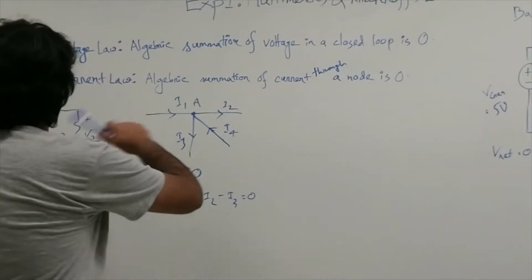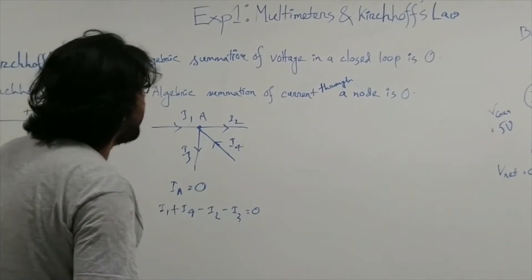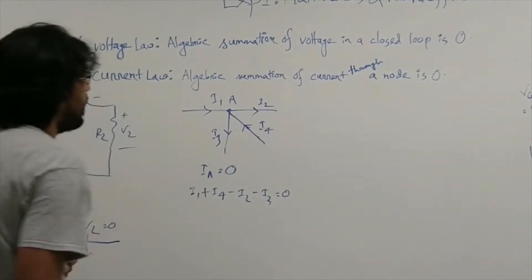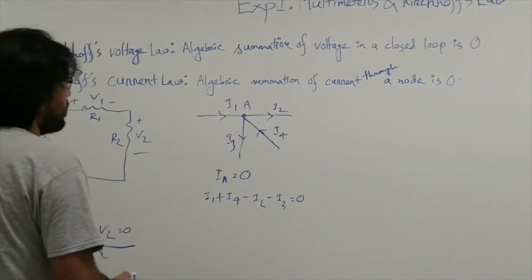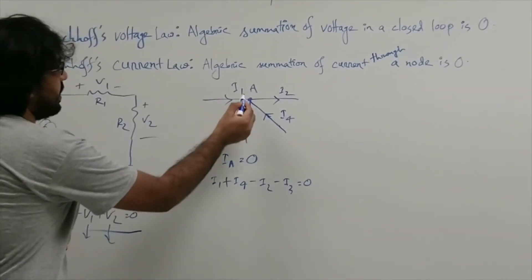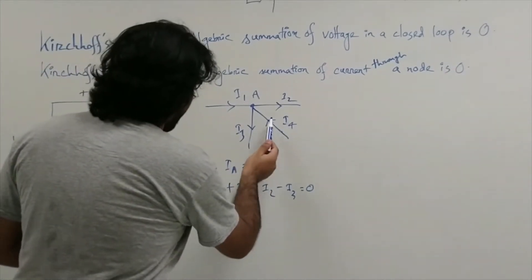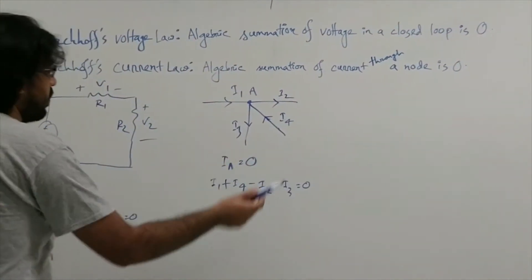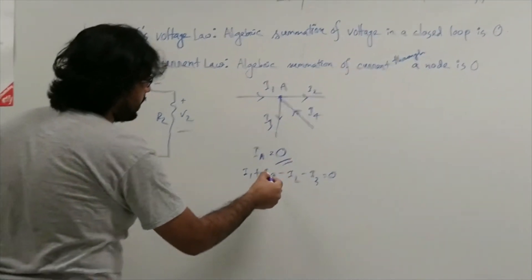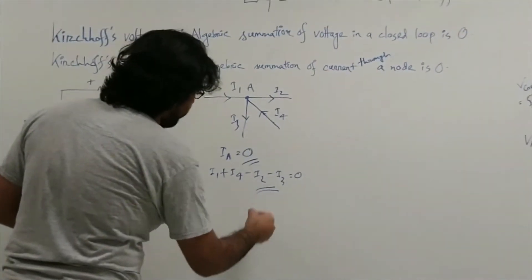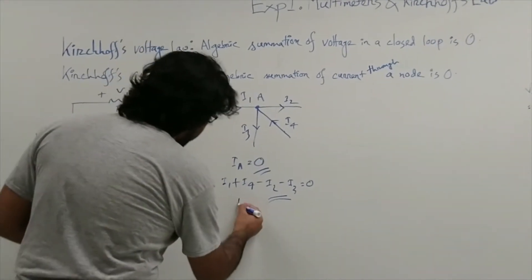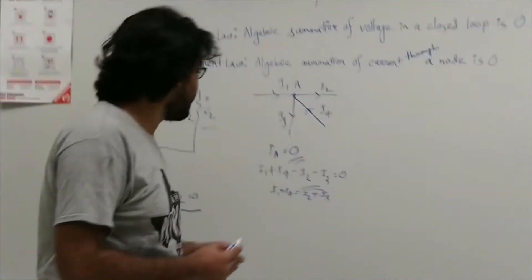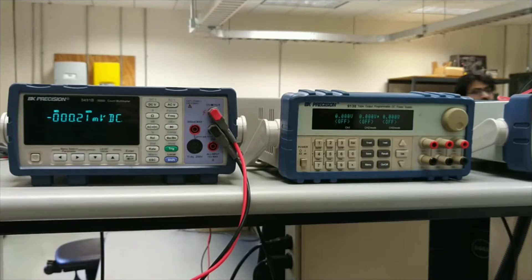Kirchhoff's Current Law states that the algebraic summation of current through a node is zero. The current coming into a node should equal the current going out. In this diagram, currents I1 and I4 enter node A, while currents I2 and I3 leave. So the equation is: I1 plus I4 equals I2 plus I3.